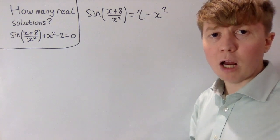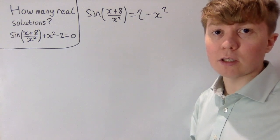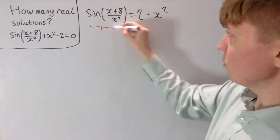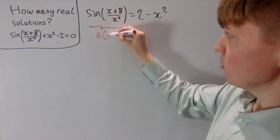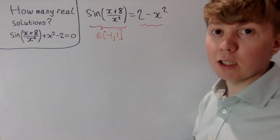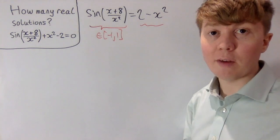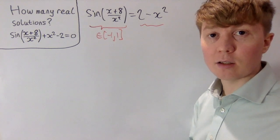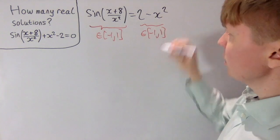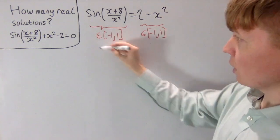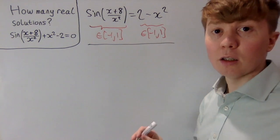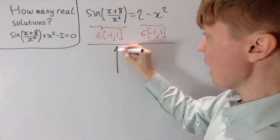Before we get onto the graphs, there's something really useful we can do to simplify the problem. Sine of a real function is just going to be between positive and negative 1. That tells us we're only interested in values of x so that 2 minus x squared is also between positive and negative 1. This lets us simplify the problem a lot and just focus on those certain values of x.